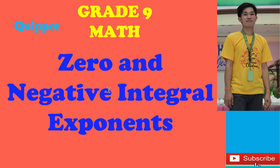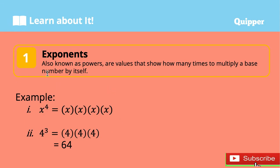Let's learn first what exponents are. Exponents, also known as powers, are values that show how many times to multiply a base number by itself. For example, x to the power of 4 — to simplify this, you multiply x by itself 4 times: x times x times x times x. Another example: 4 to the third power, or 4 cubed, is equal to 4 times 4 times 4. You multiply 4 by itself 3 times, and that equals 64.